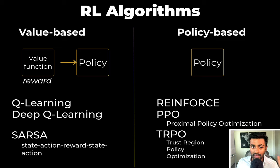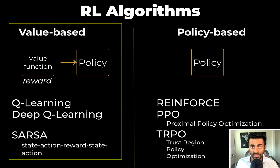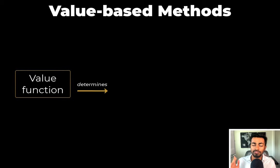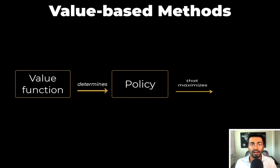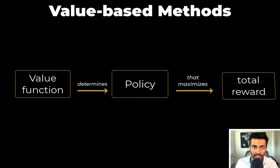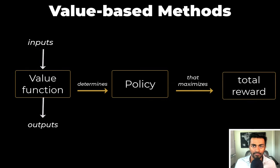For this video though, we are interested in value-based methods, as some of them make use of the Bellman equation. So value-based functions determine a value function, which in turn is used to determine a policy that will maximize total rewards. The value function is a function, so it has an input and some outputs. Depending on the inputs, there are two types of value functions.